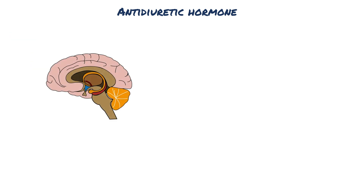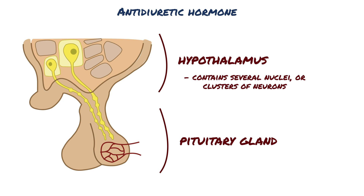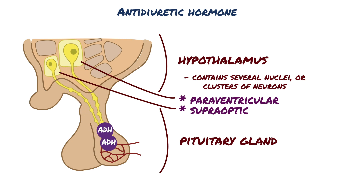The brain has two interconnected structures: the hypothalamus and the pituitary gland, connected by the pituitary stalk. The hypothalamus contains several nuclei, or clusters of neurons, and two of these — the paraventricular and supraoptic nuclei — contain neurons that secrete ADH. When ADH is produced, it travels down the axons of these neurons and is stored in small dilations called herring bodies.